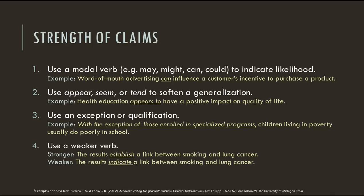The words appear, seem, and tend have similar softening effects. Saying "health education has a positive impact on quality of life" is a sweeping generalization. It would be more accurate to say "health education appears to have a positive impact on quality of life." You also can directly state an exception or qualification in order to moderate a claim. It would be one thing to claim that all children living in poverty do poorly in school, and quite another to say "with the exception of those enrolled in specialized programs, children living in poverty usually do poorly in school." Your choice of verb can also help you strengthen or weaken a claim. For instance, saying "the results establish a link between smoking and lung cancer" is a stronger, more conclusive claim than "the results indicate a link between smoking and lung cancer." Using these techniques will allow you to add nuance and complexity to your ideas, improving your style as an academic writer.